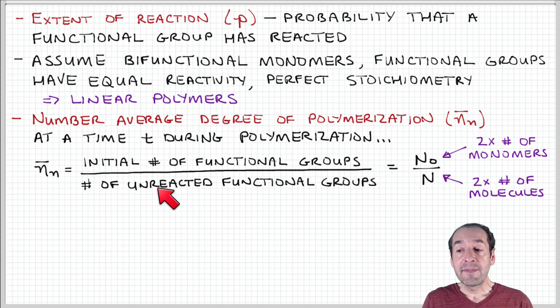At some time t, the number of unreacted functional groups is going to be equal to twice the number of molecules present, because now we not only have monomers present, but we also have polymers present. But even the growing chains have two functional groups, one on each end of the chain.